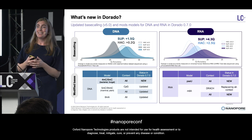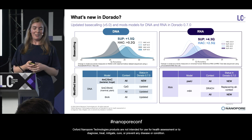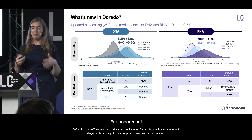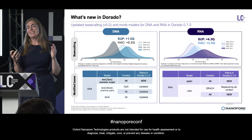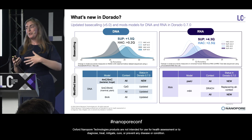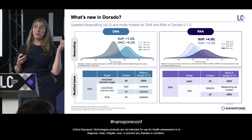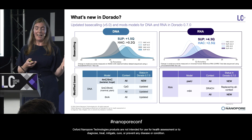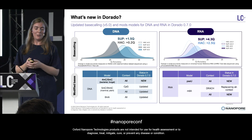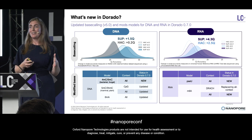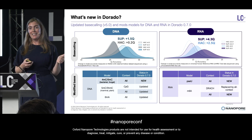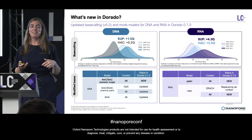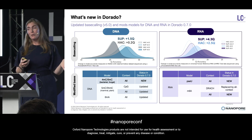On the RNA side, we're actually seeing even bigger jumps. Because of a really big internal push on improving our datasets and training process for RNA, along with these new base calling model architectures, we have a more than 4.3Q improvement for SUP and also a really big 2.5Q improvement for HAC in our validation datasets. Really exciting advancements in RNA, approaching Q20 accuracy. We also have a new pseudouridine model and a new all-context m6A model, replacing the previous DRACH-context model.